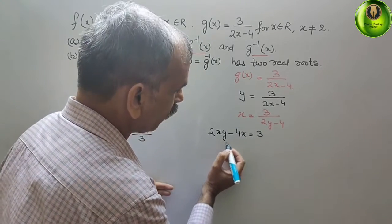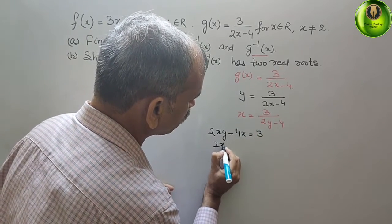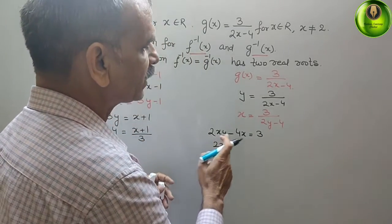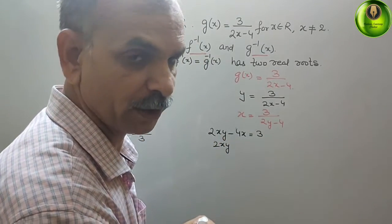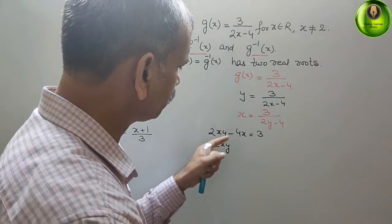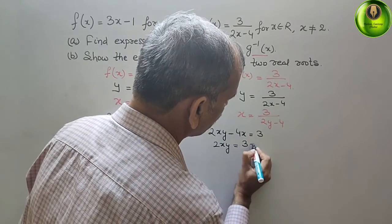Now bring this to this side. It will be 2xy. Don't take x as common, just bring this to this side. So that is equal to 3 plus 4x.